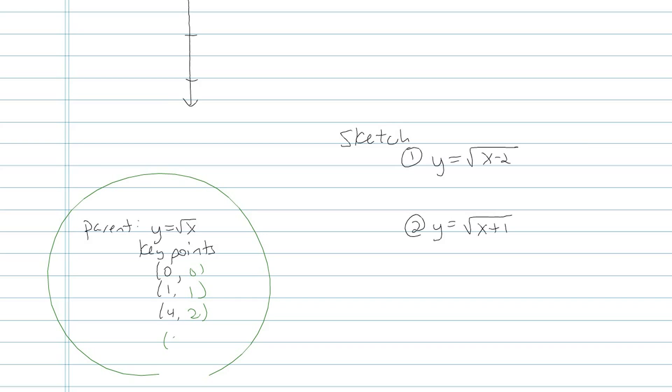Now notice I'm not using the point 2 for x, for example, because square root of 2 is some kind of decimal. I'm not totally sure what that is without a calculator. It exists, it's just not an easy point for me to graph. So I'm going to be basing my parent on those three key values.